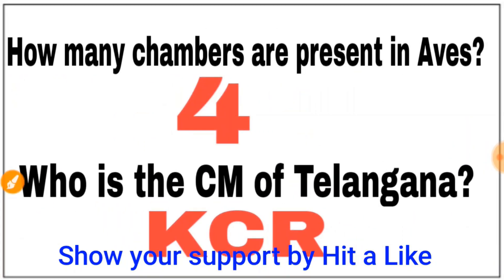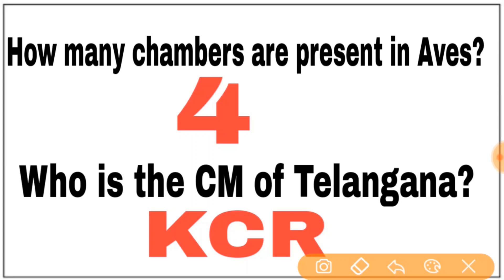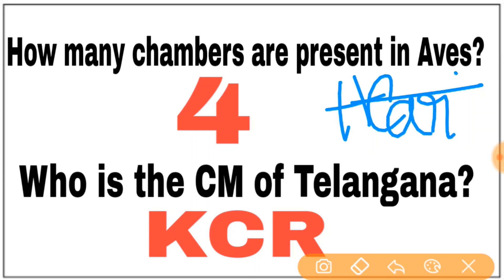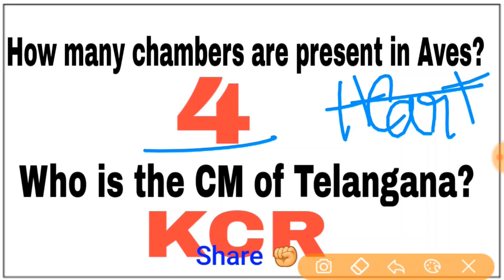How many chambers are present in Aves? There are 4 chambers in Aves. Amphibians, however, have 3 chambers.